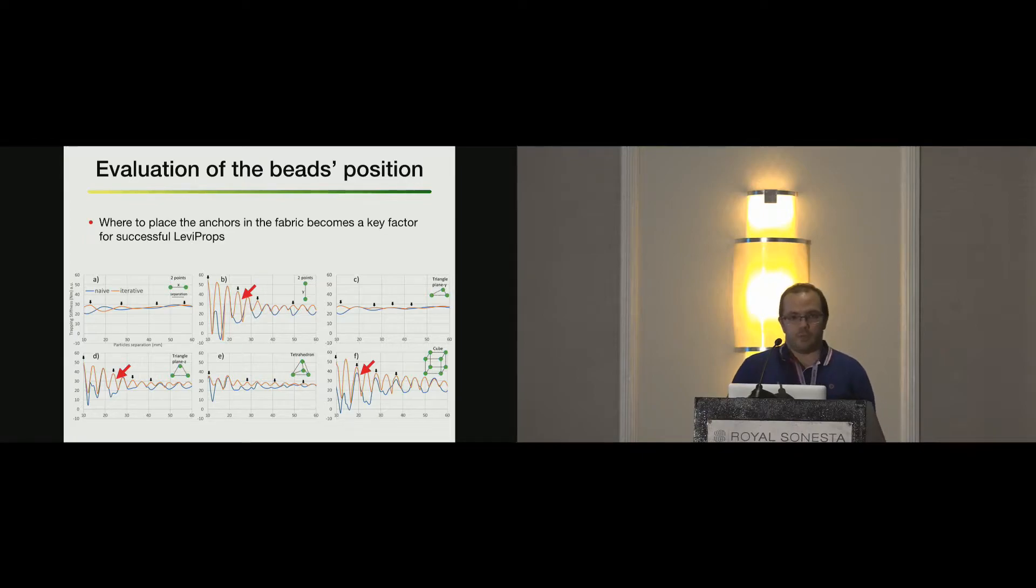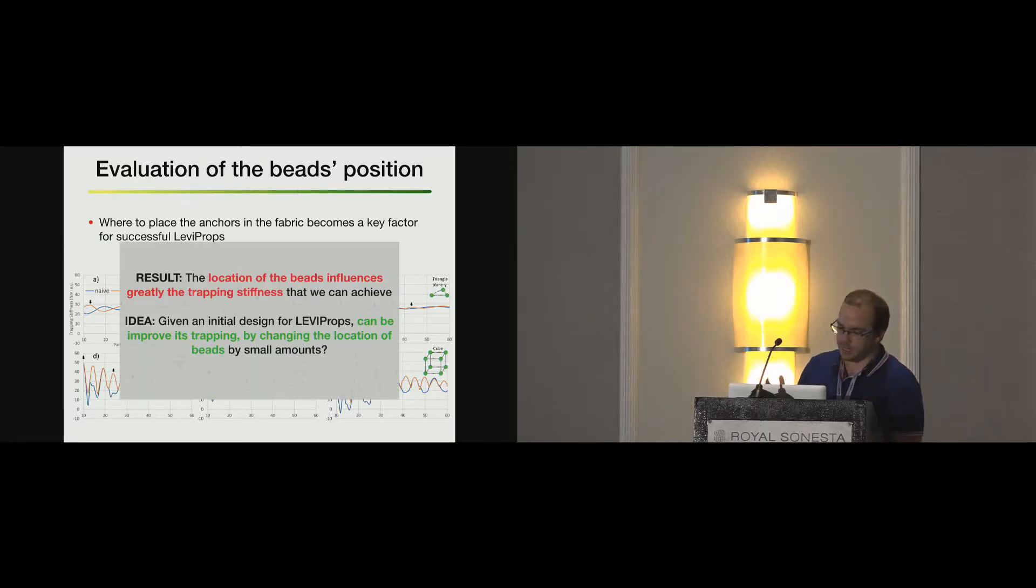And the decision of where to place the anchors in the fabric became a key factor for successful Leviprops. This indicates that our relocation of the bit, just a few millimeters, can transform a bad Leviprop into an optimum Leviprop. This is a key aspect of our approach, as it indicates that given an initial geometry design for Leviprops, it should be possible to refine their position, improving trapping stiffness, even with the minimum anchor displacement from the initial design.